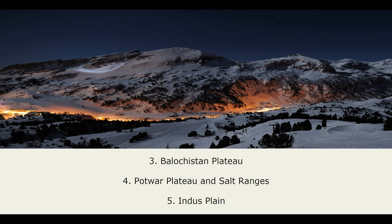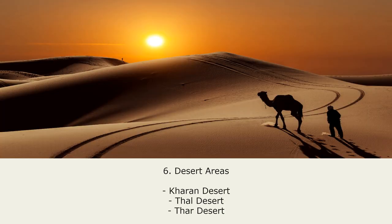Number three: Balochistan Plateau. Number four: Potohar Plateau and Salt Range. Number five: Indus Plain. Number six: Desert Areas. In Desert Areas there are three types of deserts — Number one: Haran Desert, Number two: Thal Desert, Number three: Thar Desert.